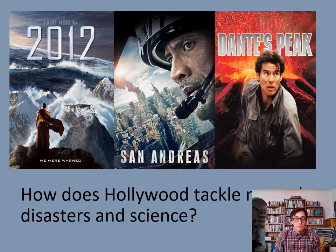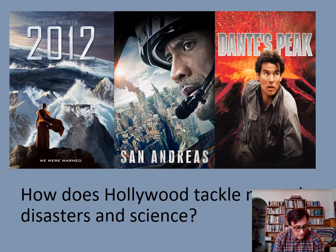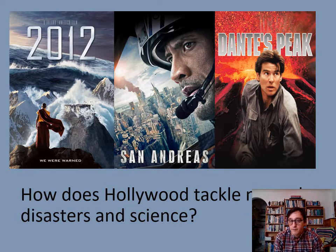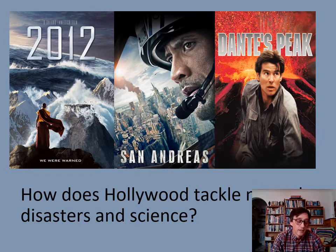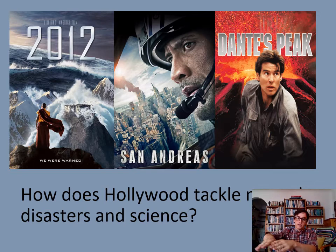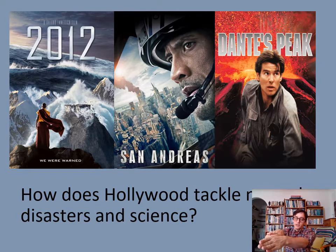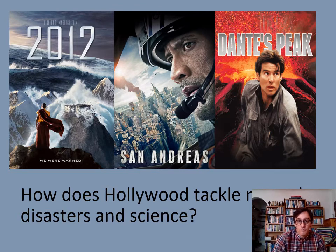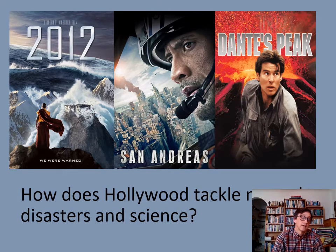How does Hollywood tackle natural disasters and science? Do they exaggerate it? For example, there's Pierce Brosnan in Dante's Peak, or in San Andreas. Hopefully you've heard of the San Andreas Fault — a major fracture in the Earth's surface which is moving in opposing directions. Lots of stresses and strains build up in opposing directions, and eventually there's a shift along that fault line, and you get an earthquake and a release of energy. San Andreas is essentially about that. Did they exaggerate it? Did they get the science right?